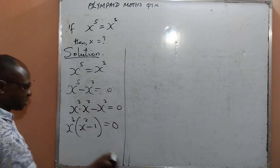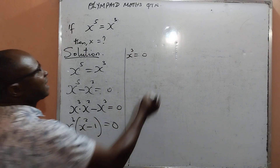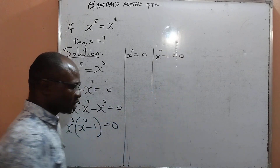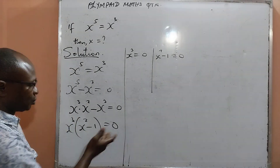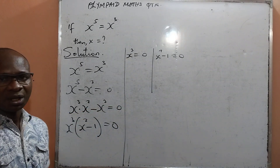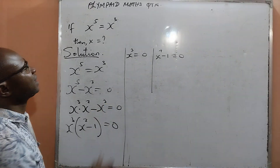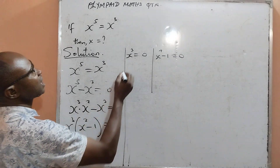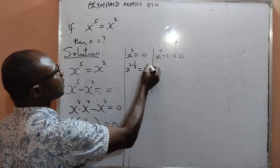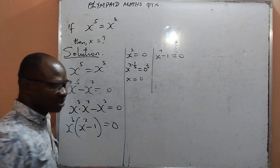From x raised to power 3 equal to 0, I can remove the power of 3 by raising both sides to the power of 1 over 3. That means x raised to power 3 multiplied by 1 over 3 equals 0 raised to power 1 over 3, so 3 cancels 3 giving me x, and 0 raised to power 1 over 3 is equal to 0.